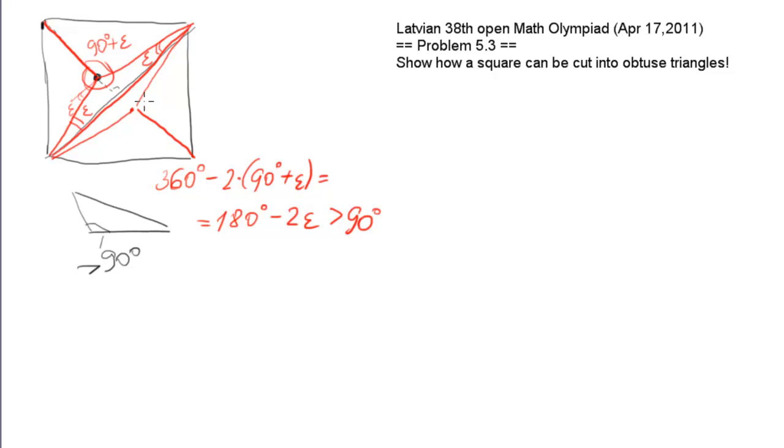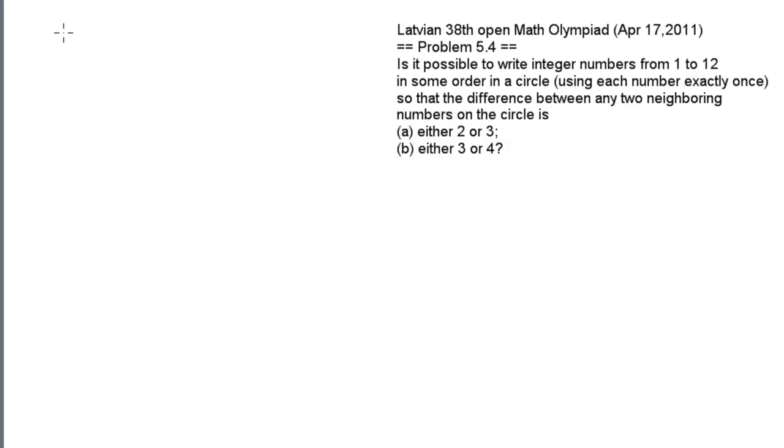Problem 4 for grade 5 students involves writing 12 numbers in a big circle so that any two numbers have difference either 2 or 3.